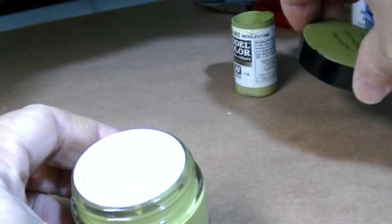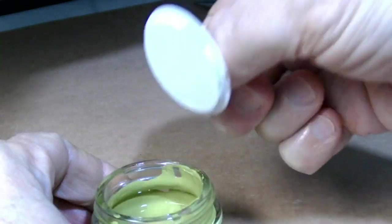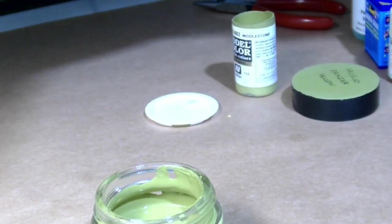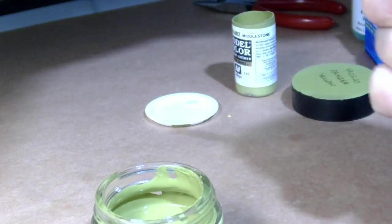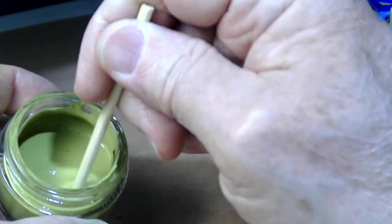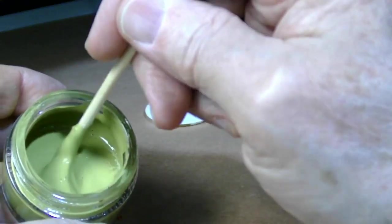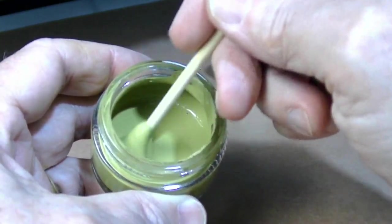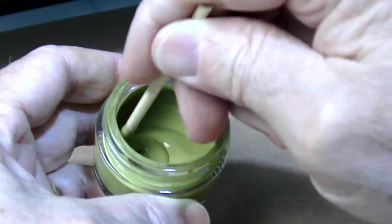Vallejo Panzer Yellow. Now if you just put it in the jar and you go ahead and try to brush it, good luck on that. Maybe you can do it, I don't know. Some people can. I like my paint to be thinner than this. You can see that's thick—that's way too thick for me.